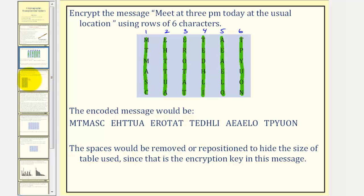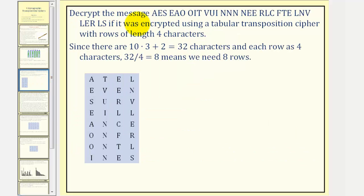Let's decrypt the message given here if it was encrypted using a tabular transposition cipher with rows of length four. So because we know it was formed with rows of length four characters, we'd form a table with four columns, which we see here, but before we decrypt the message, we do have to know how many rows there were.